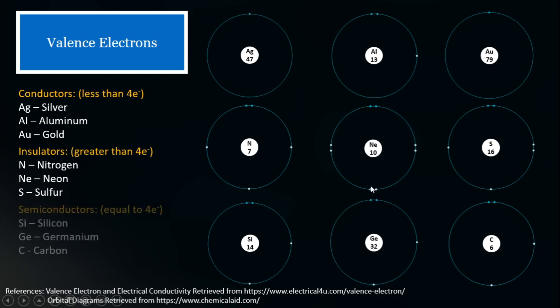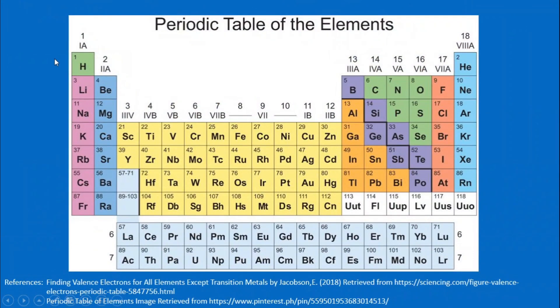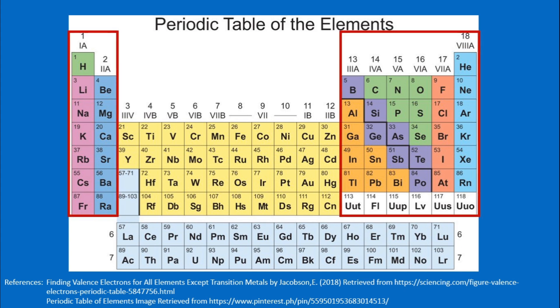Finally, we have silicon, germanium, and carbon as semiconductors. There is actually a shortcut in determining the number of valence electrons, and we will be using the periodic table. Shown here is the periodic table. Before I discuss the shortcut, I'll give a disclaimer first. The shortcut that we will be discussing is only applicable to these elements.